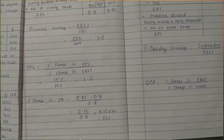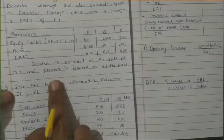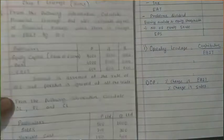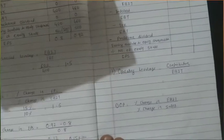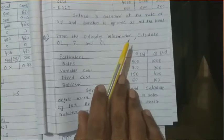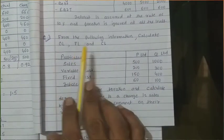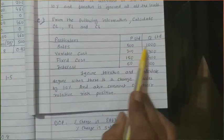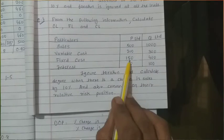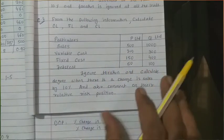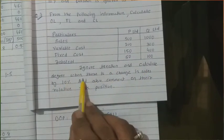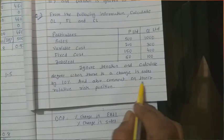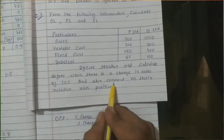Simple — no conclusion required, just calculate financial leverage and degree of financial leverage. Question number 2: From the following information, calculate operating leverage (OL), financial leverage (FL), and combined leverage (CL) for P Limited and Q Limited. Sales: 500, 1000. Variable cost: 200, 300. Fixed cost: 150, 400. Interest: 50, 100. Ignore taxation. Also calculate degrees when there is a change in sales by 10%, and comment on their relative risk position.